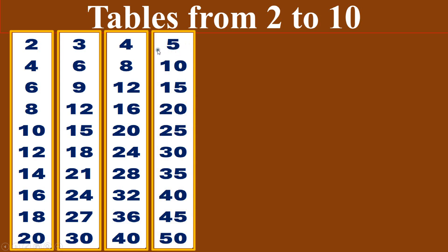Five times table. Five ones are five. Five twos are ten. Five threes are fifteen. Five fours are twenty. Five fives are twenty-five. Five sixes are thirty. Five sevens are thirty-five. Five eights are forty. Five nines are forty-five. Five tens are fifty.